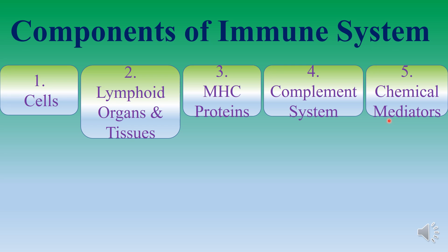To name the five components: immune cells, lymphoid organs and tissues, major histocompatibility complex proteins, complement system, and chemical mediators.